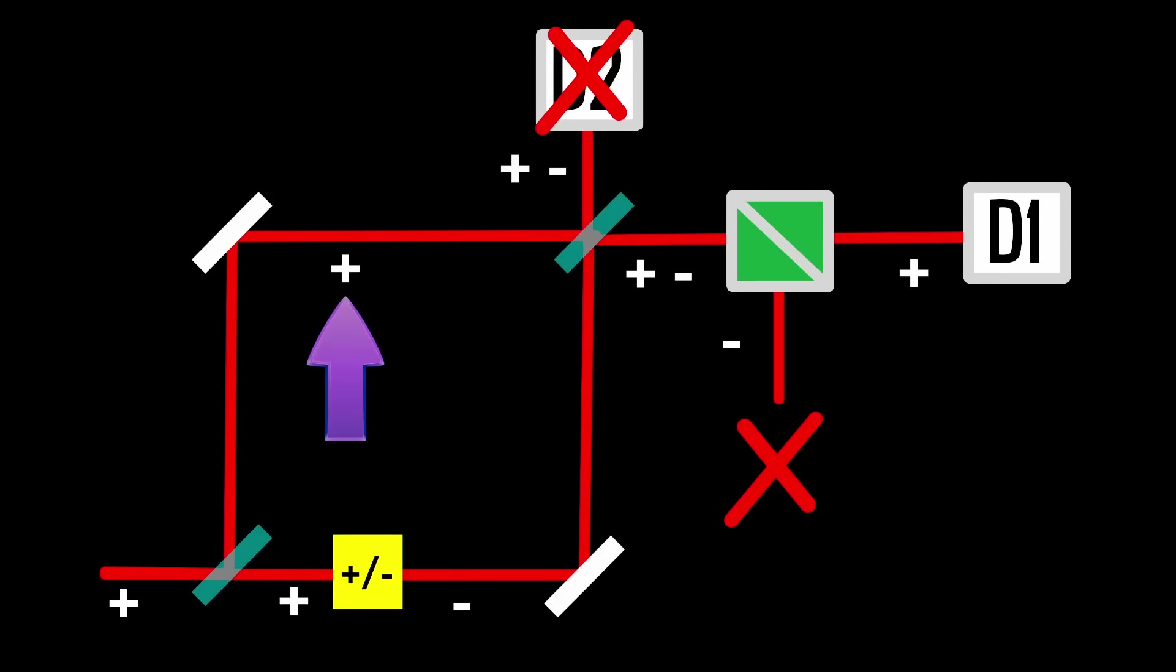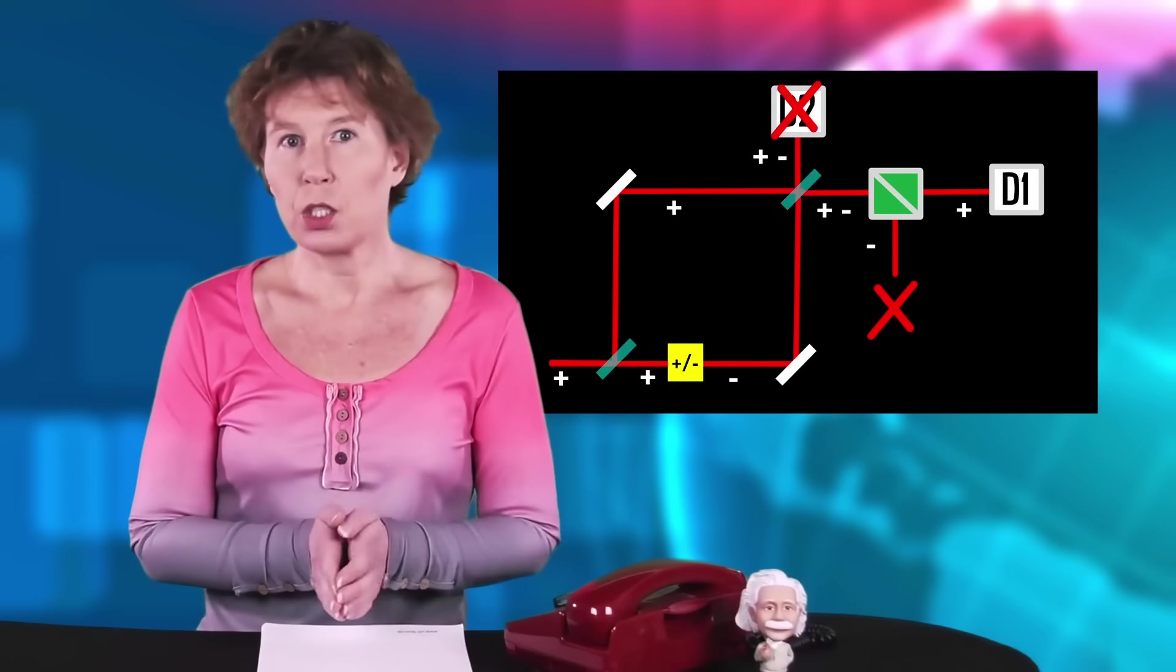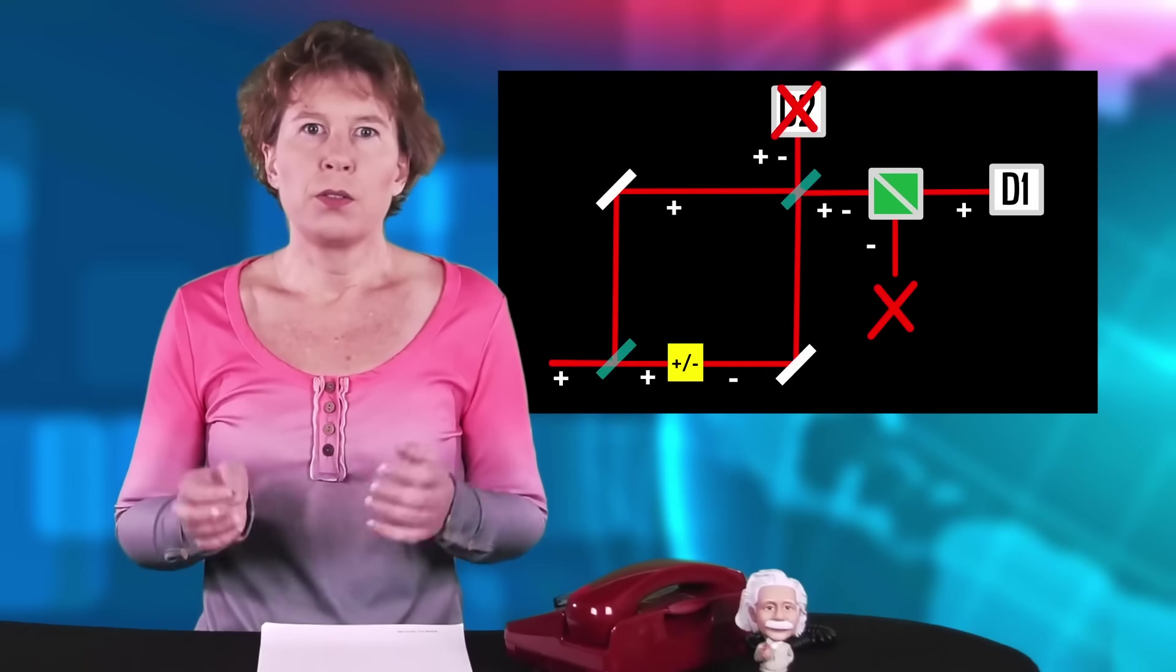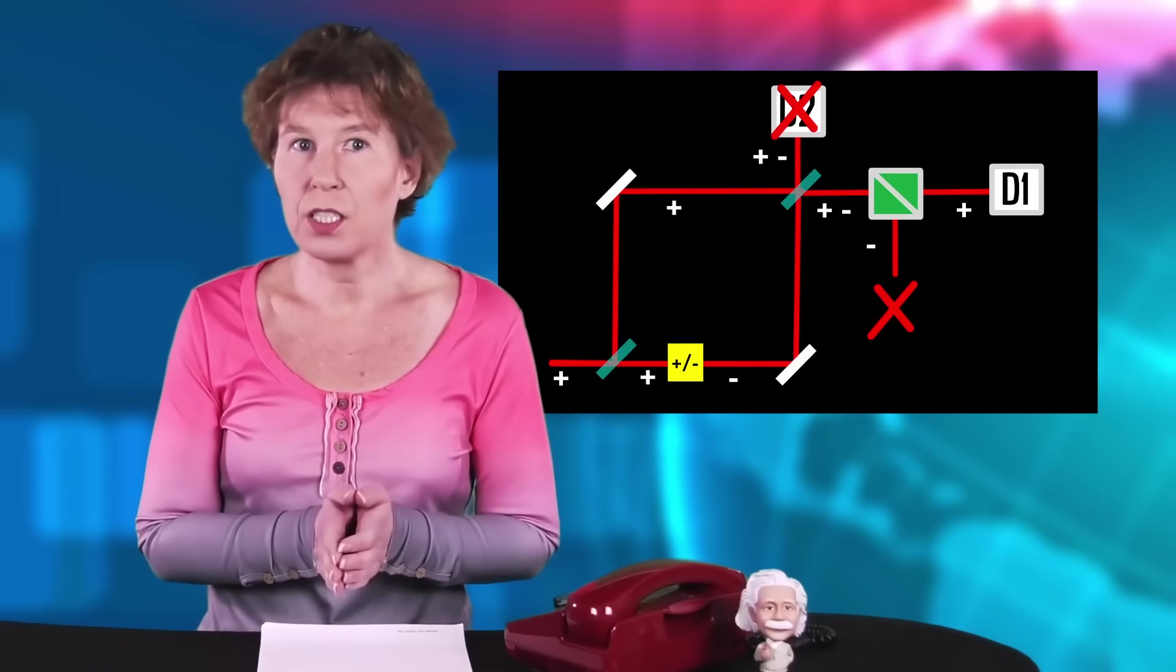Or to put it differently, whatever goes along the lower path doesn't make a contribution to what goes to detector one. Okay, so the photon is on the upper path. Now you want to know what the polarization does.